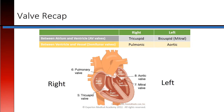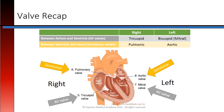Here's a valve recap. The AV valves are your tricuspid and bicuspid, also called the mitral valve. Your semilunar valves are your pulmonic and aortic valves. Remember that you have one AV valve and one semilunar valve on each side of the heart.